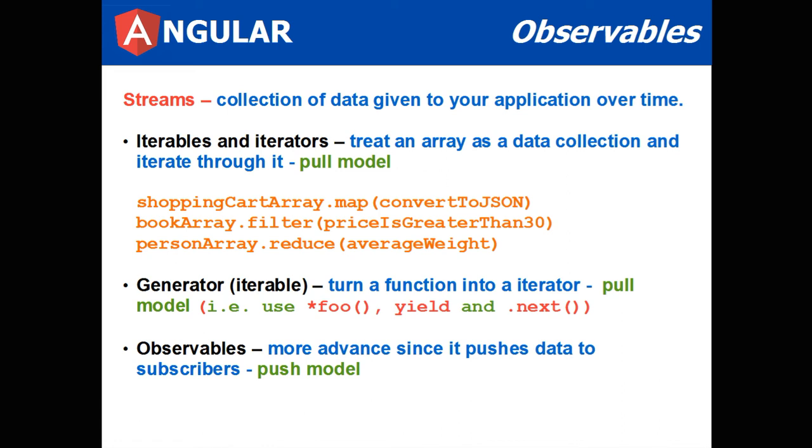You can have a person array and reduce it by operating an average weight function on it. In that scenario, you'd wind up with a single number which is the average weight of the people.